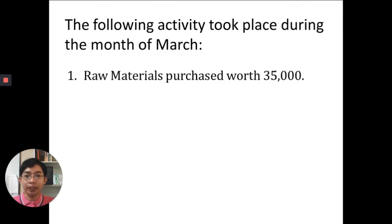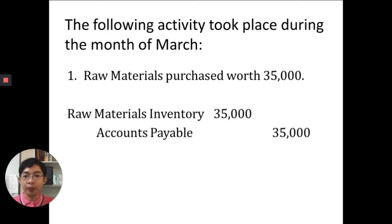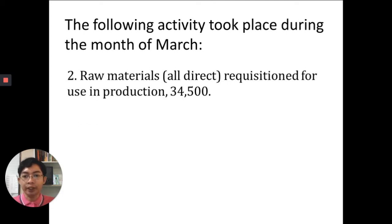Number one: raw materials purchased worth $35,000. The entry would be debit raw materials inventory, credit accounts payable. Remember, if the problem is silent as to what mode we are going to pay for inventory, the assumption is that it is on credit, so we use accounts payable as our account title.